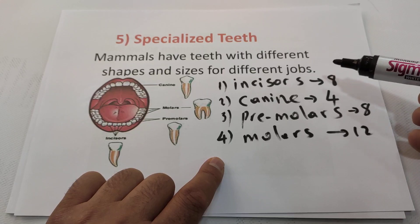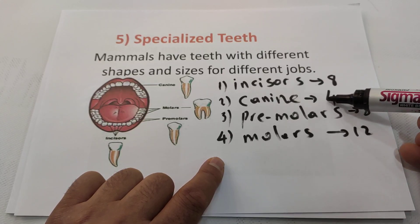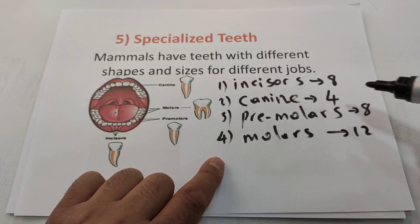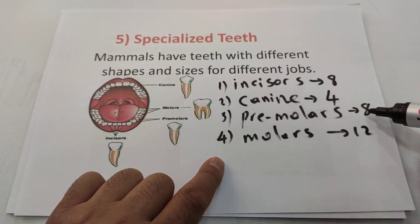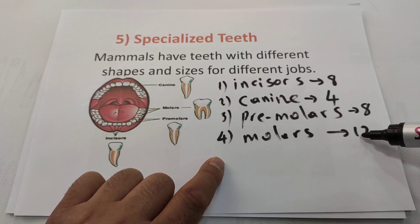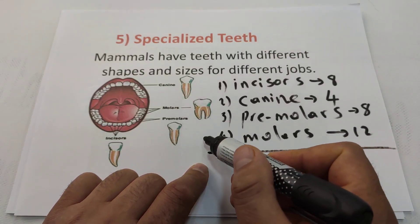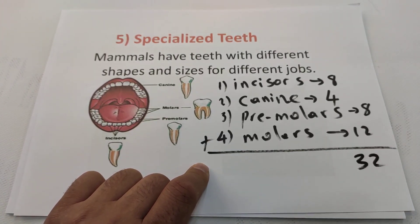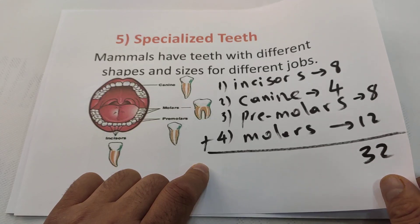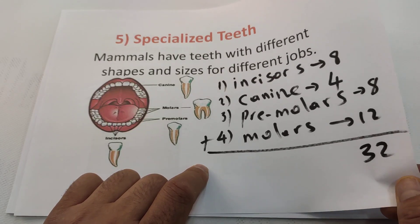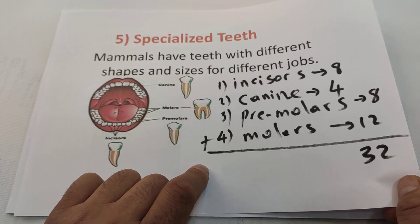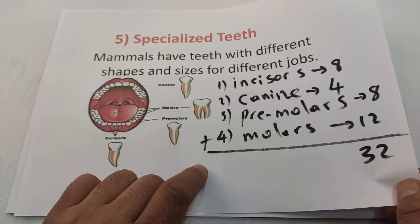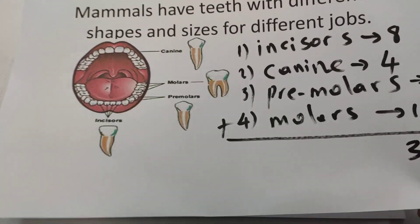Let us calculate. Eight incisors plus four canines is twelve; twelve plus eight premolars is twenty; twenty plus twelve molars is thirty-two. Adult human beings have thirty-two teeth. Babies and young people have fewer, of course.